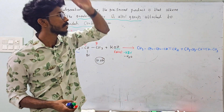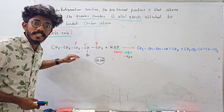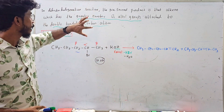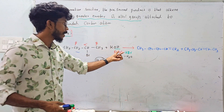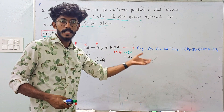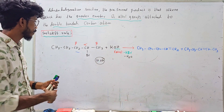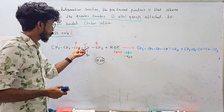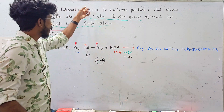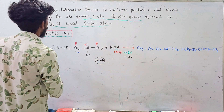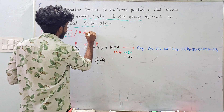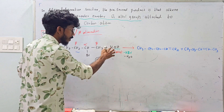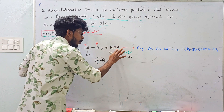The major product is determined by the Saytzeff rule. This reaction is called dehydrohalogenation — removal of hydrogen and halogen (HX). Removing hydro (hydrogen) and halogenin (KBr, potassium bromide) gives dehydrohalogenation. This is also called a beta elimination reaction, where the alkyl halide reacts with potassium bromide (alcoholic KOH) at the beta position to eliminate HX.